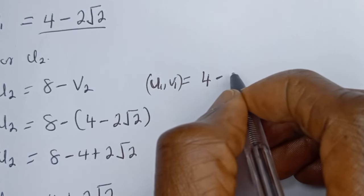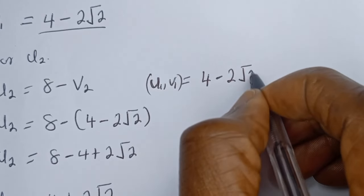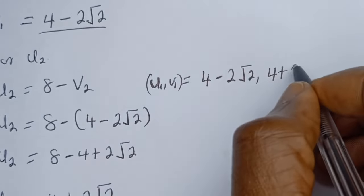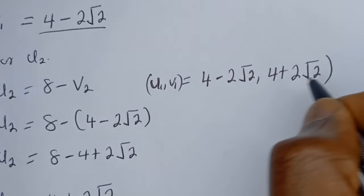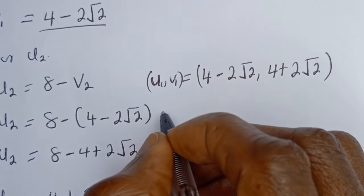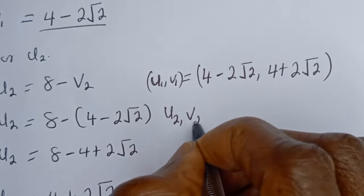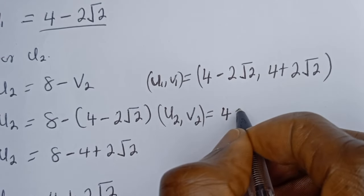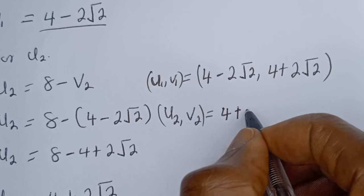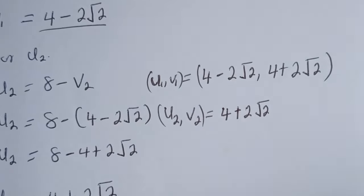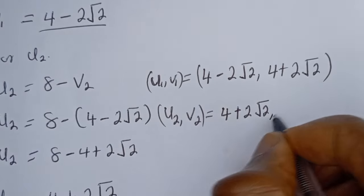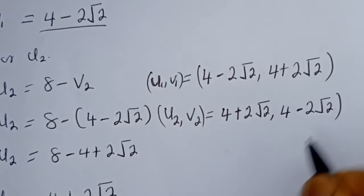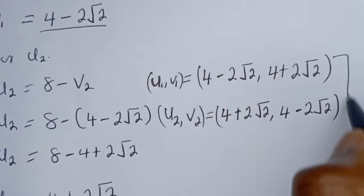So our final answers are: U1 equals 4 minus 2 root 2 and V1 equals 4 plus 2 root 2; U2 equals 4 plus 2 root 2 and V2 equals 4 minus 2 root 2. These are the final answers.